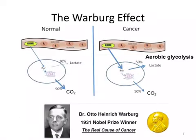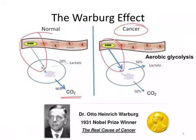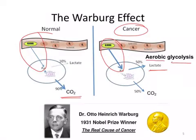Our story begins in 1920s Germany, where Otto Warburg discovered that normal cells take up a certain amount of glucose and primarily fully oxidize it to carbon dioxide. However, cancer cells take up much more glucose and convert about half of it to lactate, instead of oxidizing it all to carbon dioxide. And this occurs even in the presence of plenty of oxygen — so we call this aerobic glycolysis.